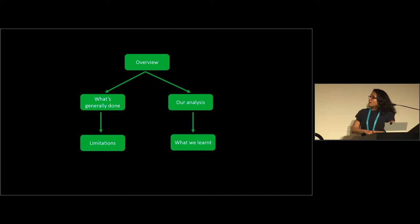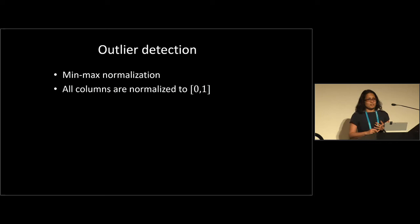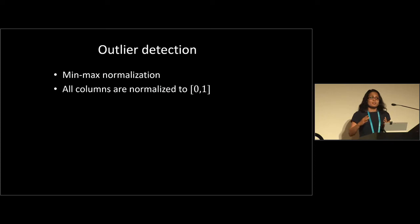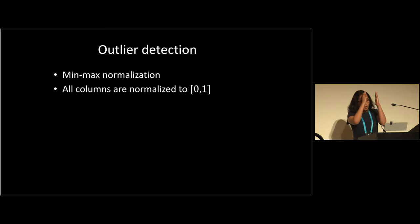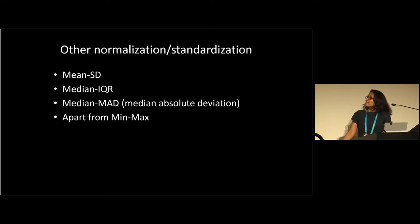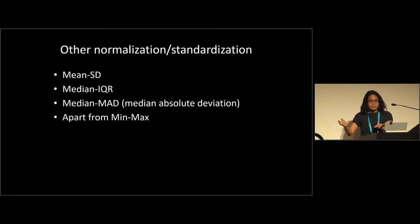Traditionally, min-max normalization is what's predominantly used — that's what I could find in the literature. All columns are normalized to zero and one via column-by-column normalization: you subtract the minimum and divide by the range. Other normalizations include mean standard deviation (subtract the mean, divide by standard deviation), median IQR (subtract the median, divide by IQR), and median-MAD (divide by the median absolute deviation).